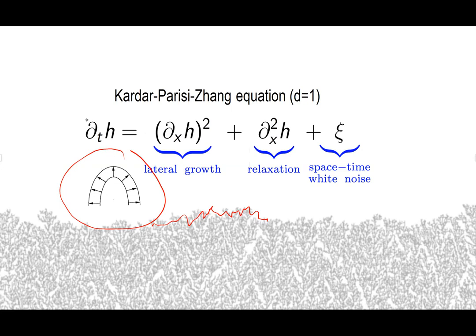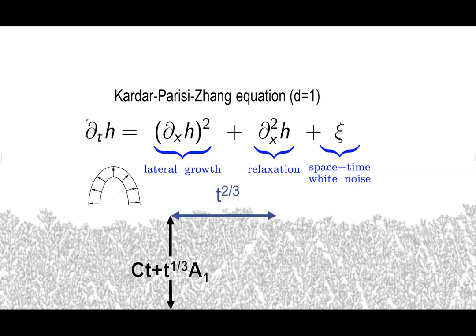Again, what we're supposed to see in the KPZ equation is the same thing as in the ballistic aggregate: fluctuations of size t^(1/3), and the fluctuation process starting from a flat interface is the Airy-one process. They live on a lateral scale of size t^(2/3) — the scale at which there are non-trivial correlations. Below that scale all you see is Brownian motion, and far above that scale it completely decorrelates.